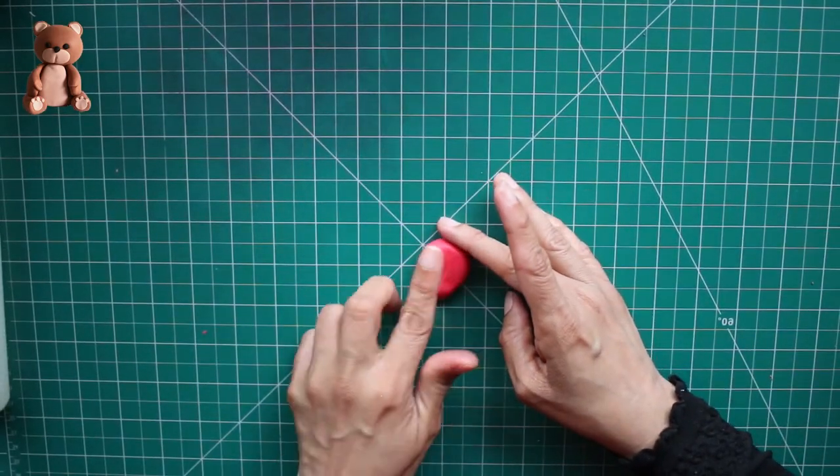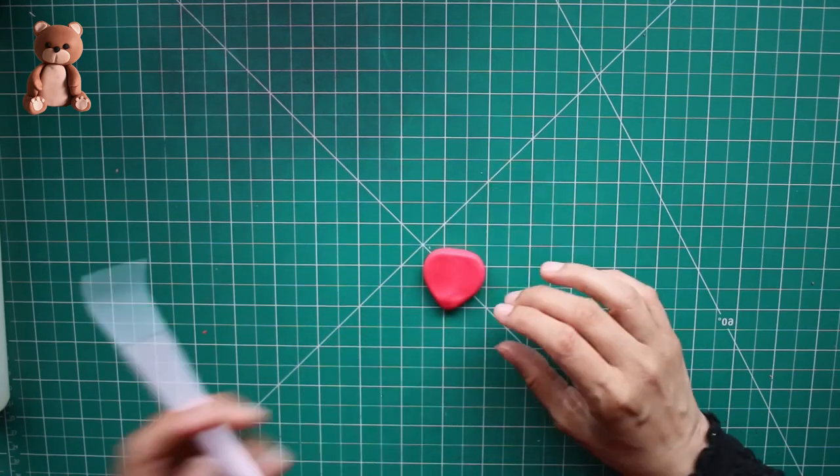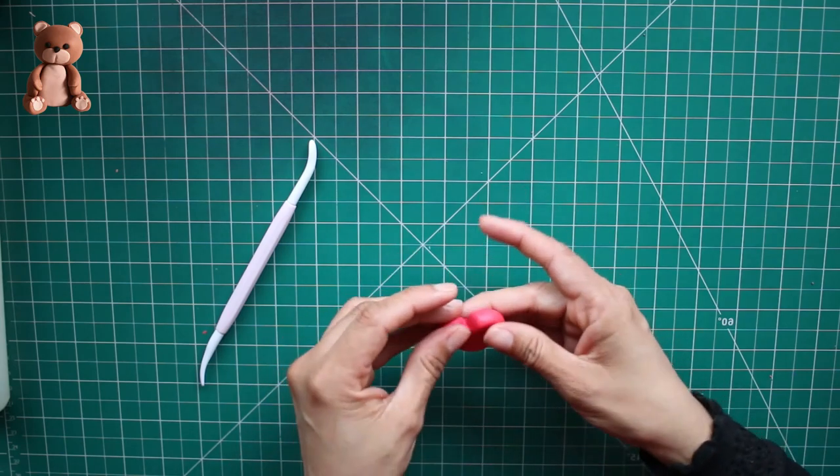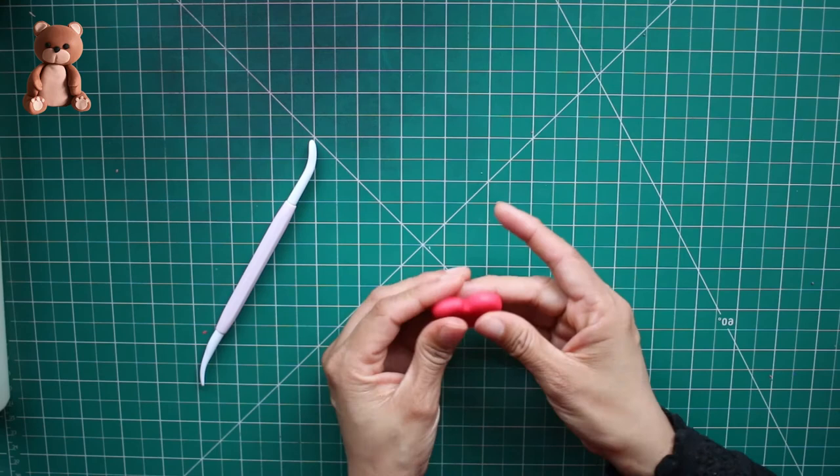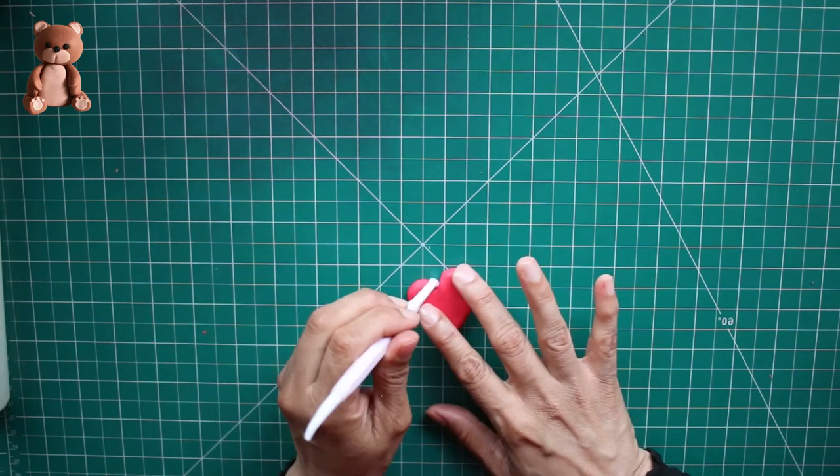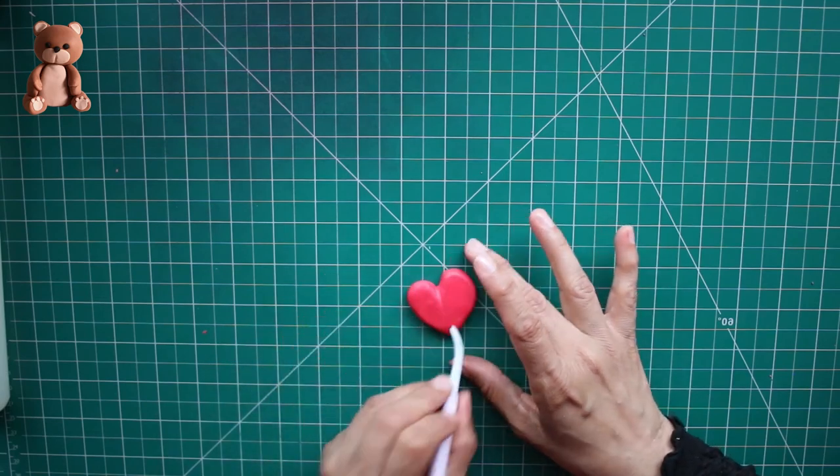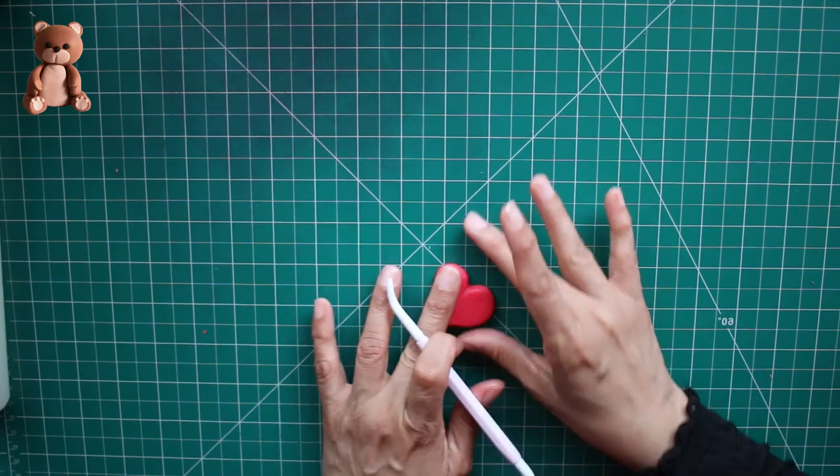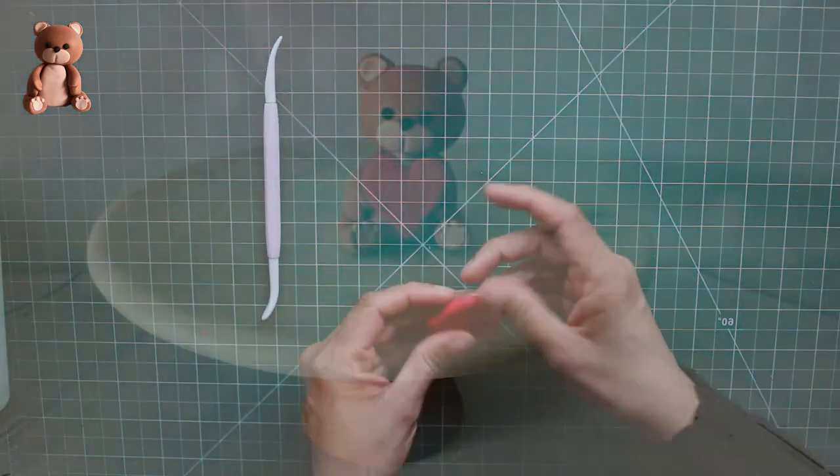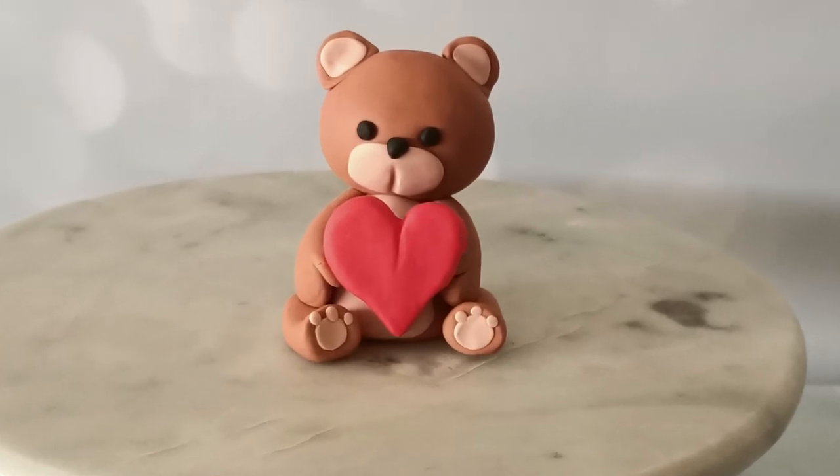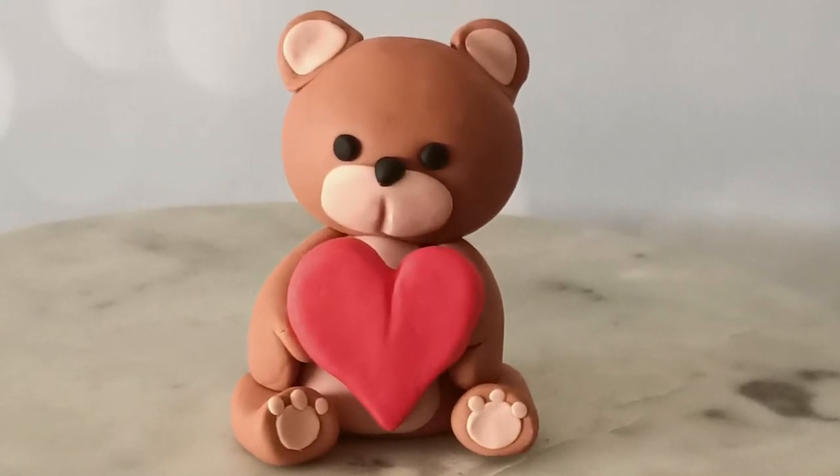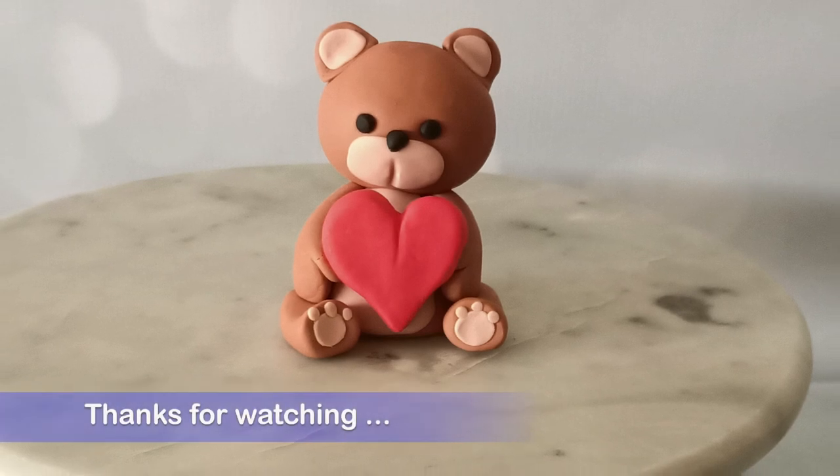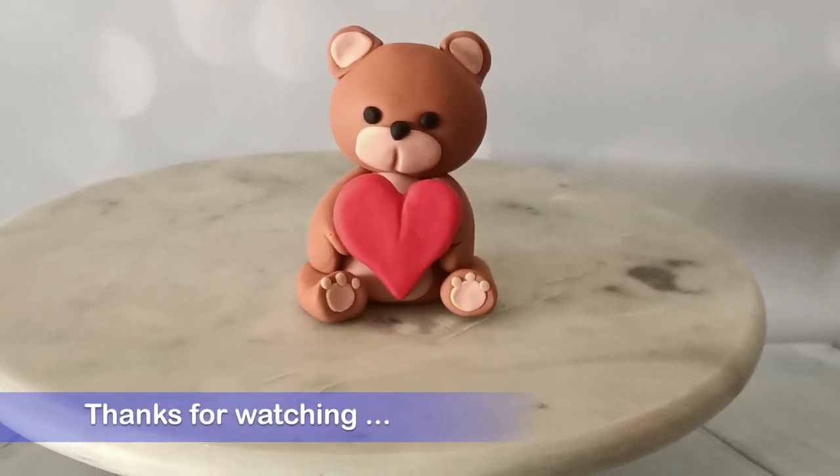Now for the last one, this is a heart and just, I made a cone and then flatten it and make an incision in the center and just shaping it into a heart shape with my hands. This is like a 3D heart. And there's your teddy bear with all the different versions. I hope you enjoyed this video. Please don't forget to like and subscribe and thanks for watching.